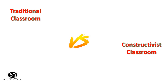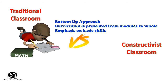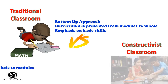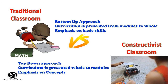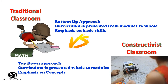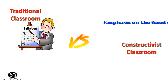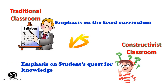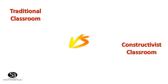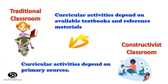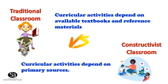The traditional classroom follows a bottom-up approach where the curriculum is presented from modules to whole, emphasizing basic skills. The constructivist classroom follows a top-down approach where the curriculum is presented from whole to modules, emphasizing concepts. Traditional classroom emphasizes a fixed curriculum, whereas the constructivist classroom emphasizes students' quest for knowledge. Traditional classroom curricular activities depend on available textbooks and reference materials, while constructivist classroom curricular activities depend on primary sources available.